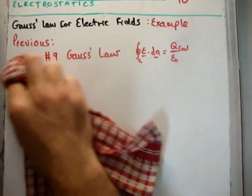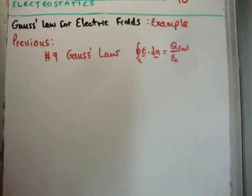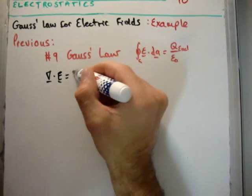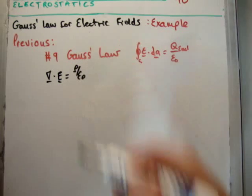Right, next what we saw is if we applied the divergence theorem, which you can see in my videos on vector calculus for electromagnetism, we're able to show that the divergence of the electric field was equal to the charge density divided by epsilon zero.